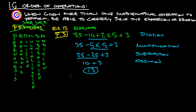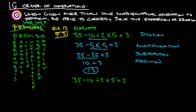Now, just as a quick sidelight — if we did PEMDAS the traditional way (parentheses, exponents, multiplication, then division, then addition, then subtraction), let's rewrite: 35 minus 10 divided by 2 times 5 plus 3. With PEMDAS, no parentheses, no exponents, so first we do multiplication: 2 times 5 is 10, giving us 35 minus 10 divided by 10 plus 3.